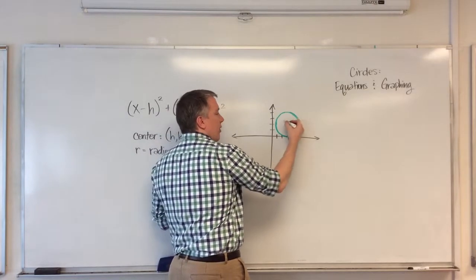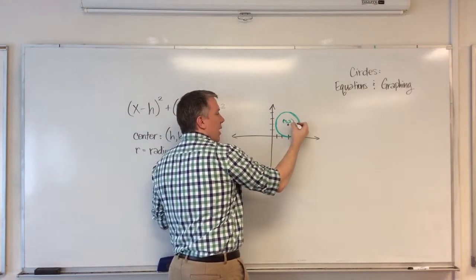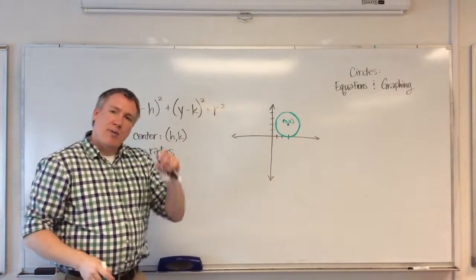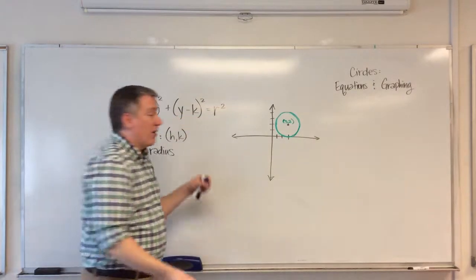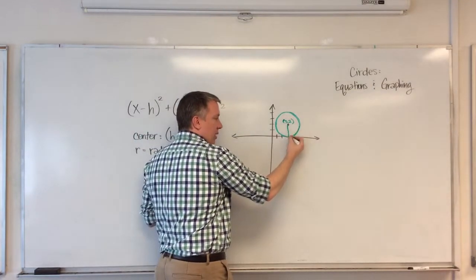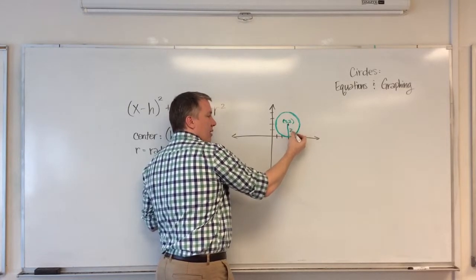I count over 1, 2, 3, up 2, that's 3, comma 2. And the radius is the distance from the center to any part on the side. So I can count any which way, but it looks like this is going to be the easiest. It looks like the radius is 2.